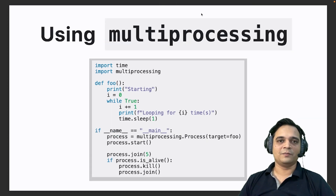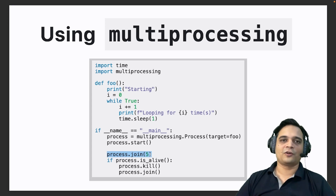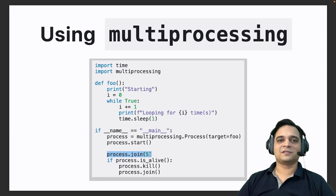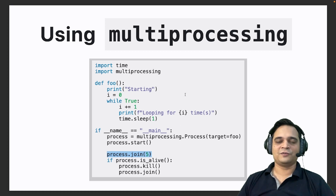The second method is the multiprocessing method. Here we create a process and then start it. The key important thing to note is the line process.join(5) — this will block the main process from executing, while the subprocess started by the function foo runs in the background. This times out after five seconds, and the subsequent if condition handles and terminates the running process.